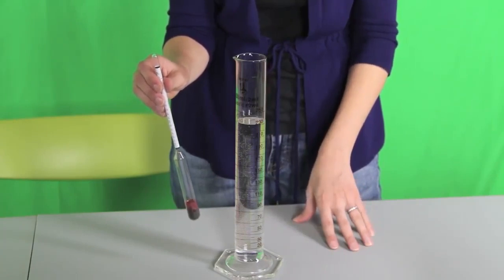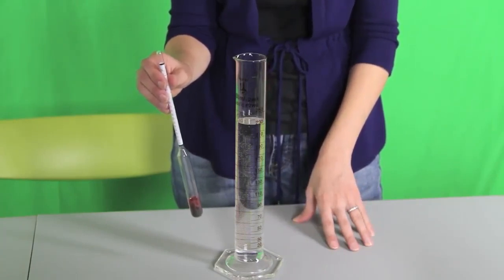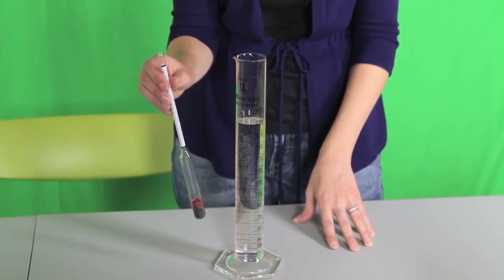Bring the sample liquid to the temperature marked on the hydrometer. This is 68 degrees Fahrenheit for specific gravity. The reading will be inaccurate if the test sample is not at this temperature.